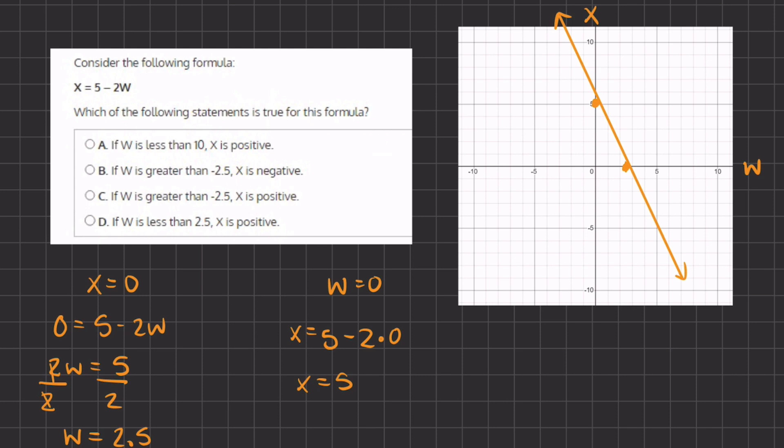Alright, so now let's read answer A. If w is less than 10, x is positive. If w is less than 10, that means that x is positive. And that is not exactly true because we do see that x is negative. And then it also becomes positive once it reaches this 2.5. So A is incorrect.